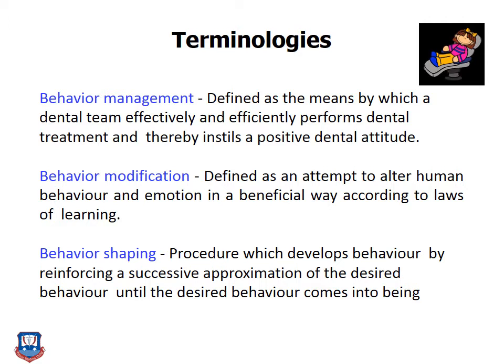Behavior modification is defined as an attempt to alter human behavior and emotion in a beneficial way according to the laws of learning. Behavior shaping is a procedure which develops behavior by reinforcing successive approximations of the desired behavior until the desired behavior comes into being. You should remember the differences between all three: behavior management, behavior modification, and behavior shaping.